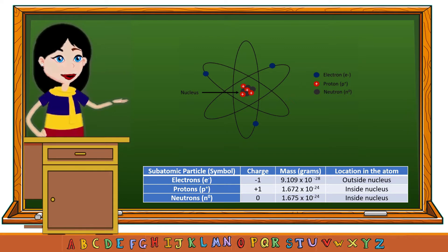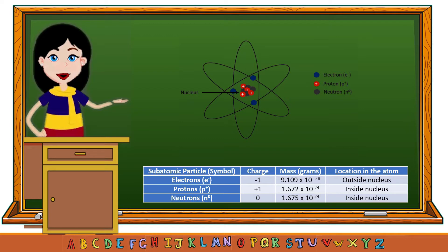Like protons, neutrons are also one of the three main particles that make up the atom. Neutrons are found inside the nucleus and have no charge. The massive part of the atom comes from the masses of protons and neutrons. Of the three subatomic particles, the neutron is the heaviest.